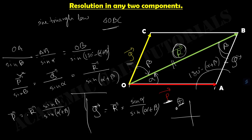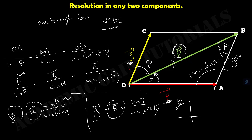The technique to remember: to find component P, we write R into the opposite angle's sine — since P makes angle alpha, we take sine beta for the P component, with sine(alpha plus beta) in the denominator. For the Q vector, since Q makes angle beta with R, we take sine alpha. So Q equals R times sine alpha divided by sine(alpha plus beta). This is the technique to remember how to find components of the original vector.